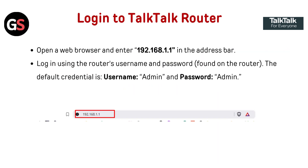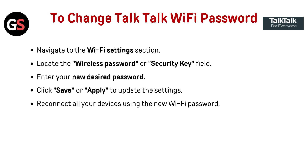To change the TalkTalk router admin password, log in to the TalkTalk router. Open a web browser and enter 192.168.1.1 in the address bar. Log in using the router's username and password found on the router. The default credentials are username: admin and password: admin.